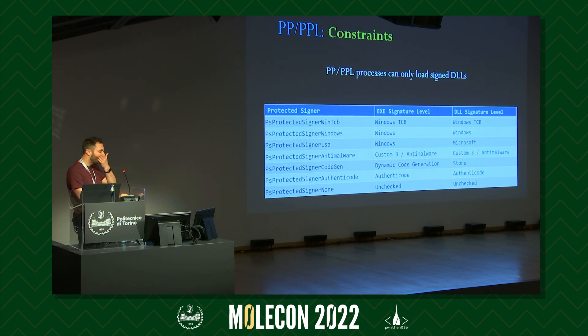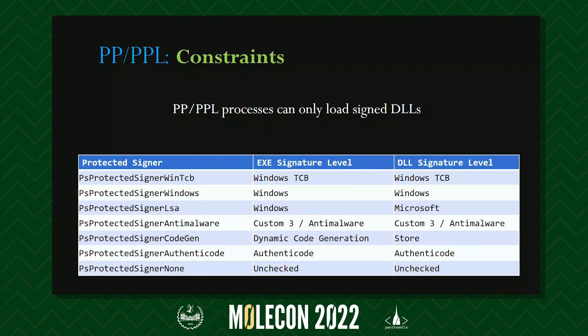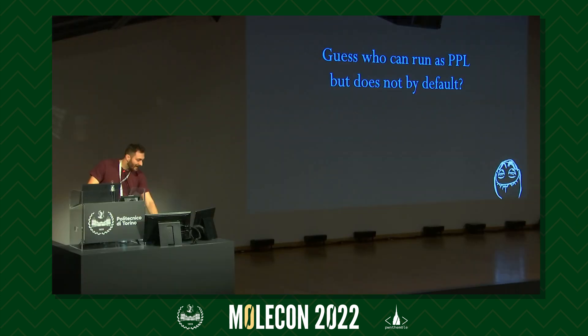The main constraints when dealing with PP or PPL are that PPL processes can only load signed DLLs. If a process has a Windows signer, it can only load Windows-signed DLLs or higher — not anything lower.